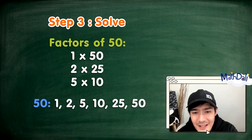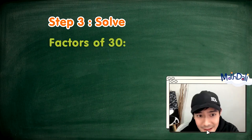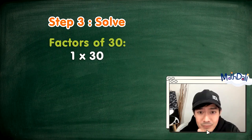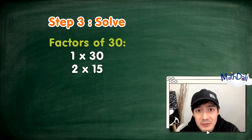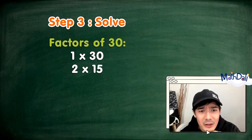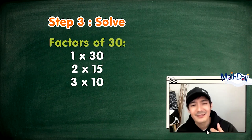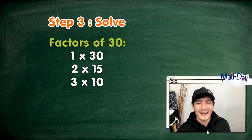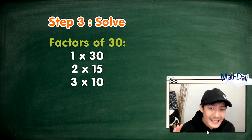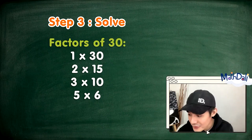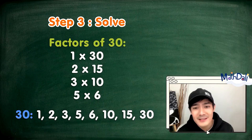How about 30? Ano ba yung factors ng 30? Pinakamadali, once again, ay 1 and 30. Using our divisibility rules: ang 2 ba ay factor ng 30? Yes, dahil ang katapat nito ay 15 — 2 times 15 equals 30. How about 3? Yes — 3 times 10 equals 30. Ang 4? Hindi — cannot be. Ang 5? Yes — 5 times 6 equals 30. So ang factors ng 30 ay 1, 2, 3, 5, 6, 10, 15, and 30.